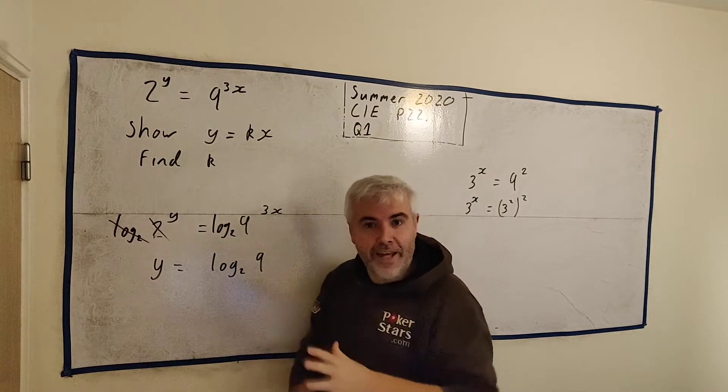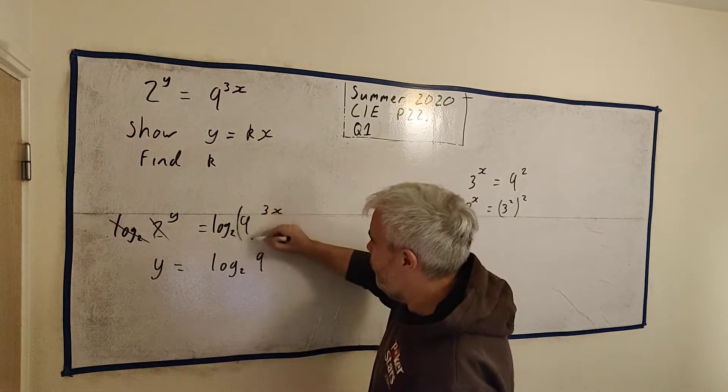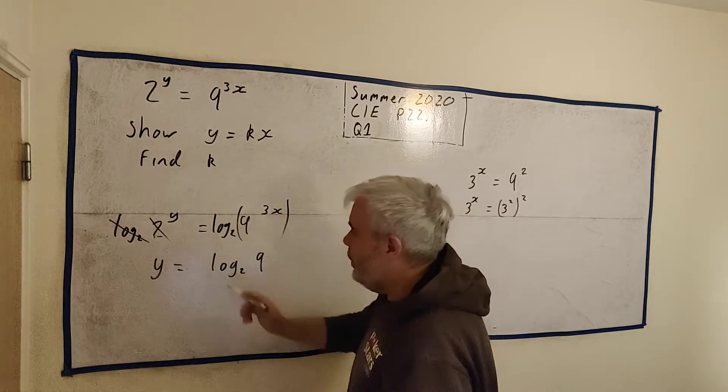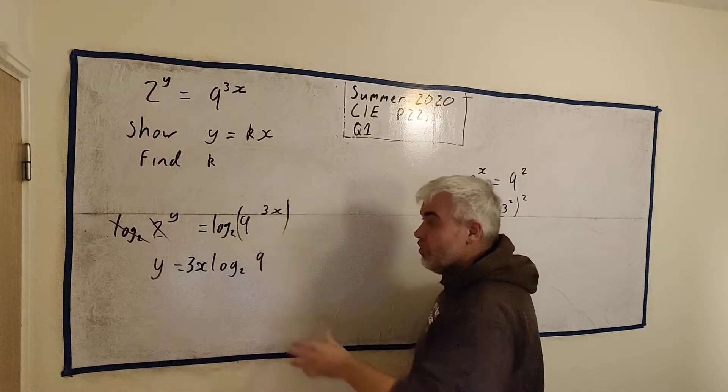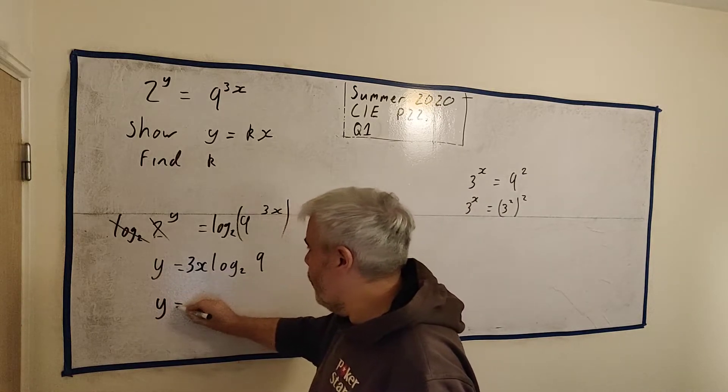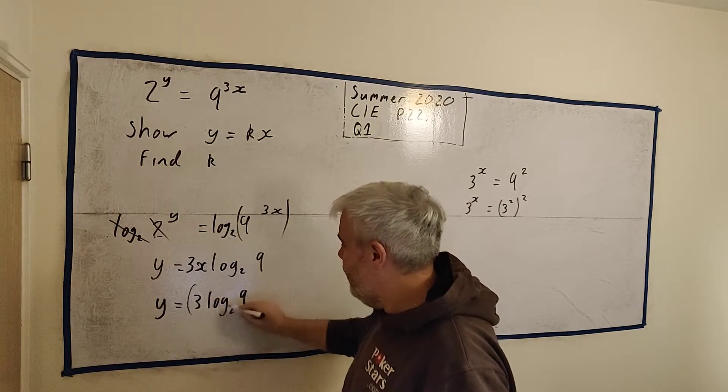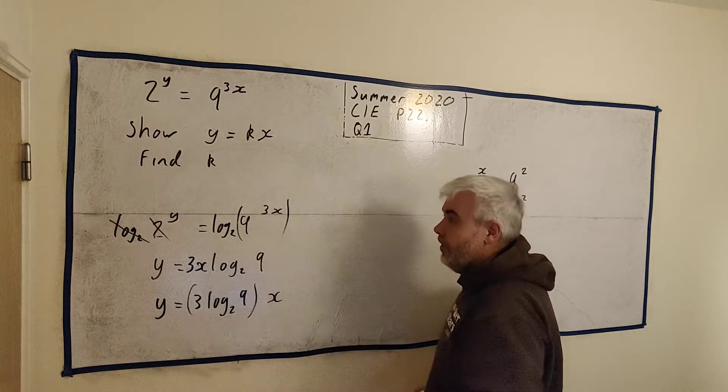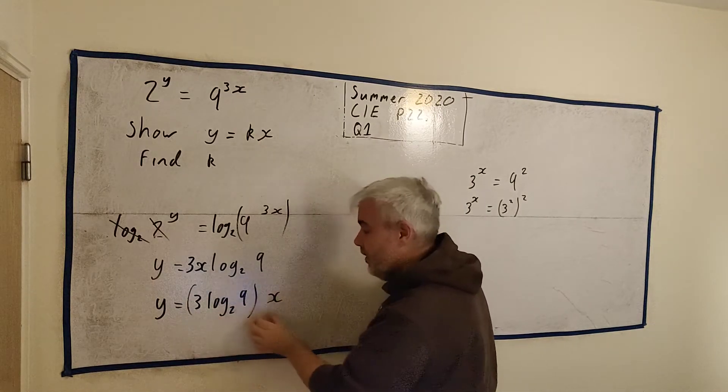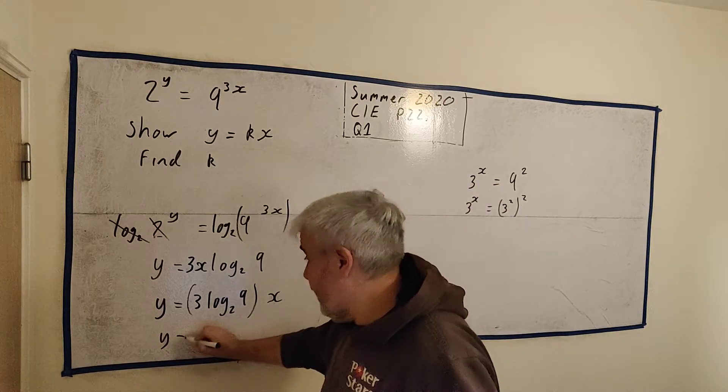Now here's where one of the great advantages of using logs come in. One of the rules about logs is anything inside the log, so in this case this is inside the log, that has a power. That power can just be moved to the front like this. So we're pretty much done in this question. Let me rewrite it a little bit just to make it more clear. I'm just going to move the x out on its own somewhere. So 3 multiplied by log to the base 2 of 9, put a bracket around to make it clear, x out here. And that's what they wanted. They want y is equal to something times x. This something can just be put into a calculator and we'll find out what it is. That's our answer then. That would be k.